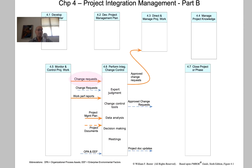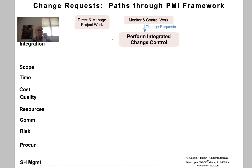First, we see change requests coming out of the monitoring process into Perform Integrated Change Control, where we're going to review all the change requests and either approve them or reject them. That looks like this in our diagram.